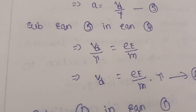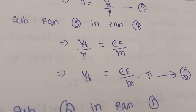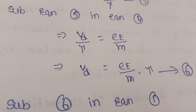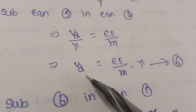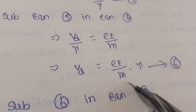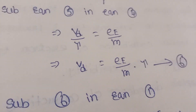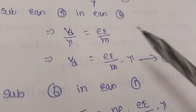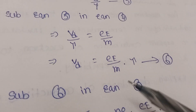We can equate both equations: v_d / tau = eE / m. Therefore, v_d = (eE / m) × tau. This is the expression for drift velocity.